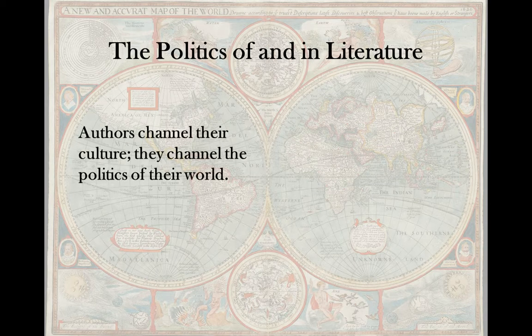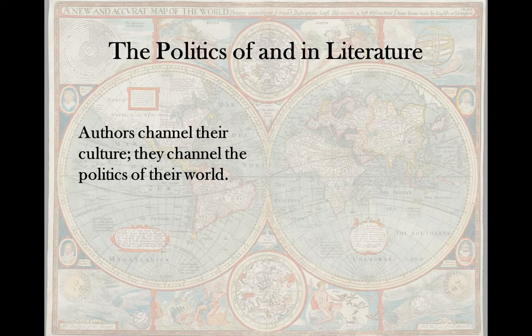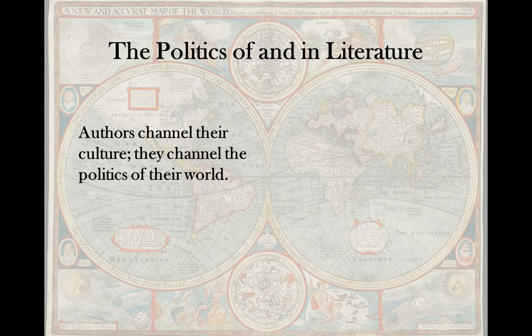The politics of and in literature: authors channel their culture and the politics of their world. When we think about the politics of a work, we don't mean Democrat or Republican — we mean how are they negotiating who gets what? Politics at its basic definition is the negotiation of power and resources. You want to think about the politics within the fictional world as a representation of the author's world, and we do see certain political themes emerge in works representative of American culture.